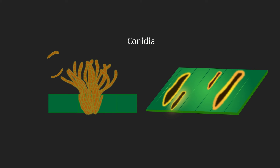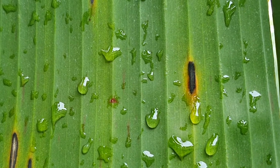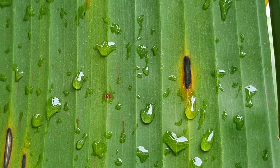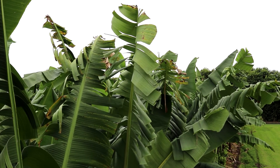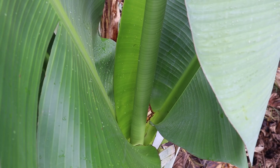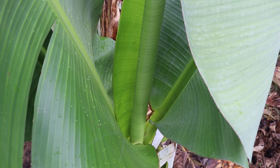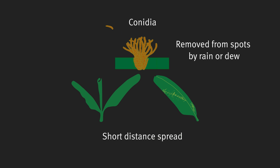Conidia are produced on the surface of stage 4 spots and form in the presence of rain or dew. They are dislodged by rainwater, spreading the disease to other leaves on the same plant or nearby plants if the rain is wind-driven. They move down with the drops and settle in the folds of unfurling leaves, spreading only a short distance and usually resulting in a line spotting pattern on leaves.